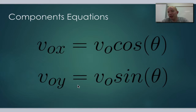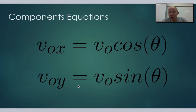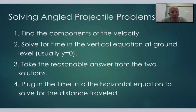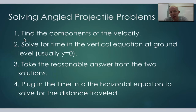So before we do any problem in angled projectiles, the first thing we do is find the velocity components — don't just take the total velocity. Here are the basic steps: first, find the components of the velocity and write them down. You're usually given a total velocity, so you need to find the component parts. Second, solve for time in the vertical equation at ground level, usually where y equals 0.